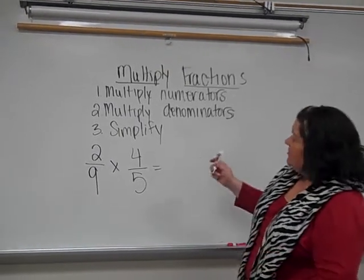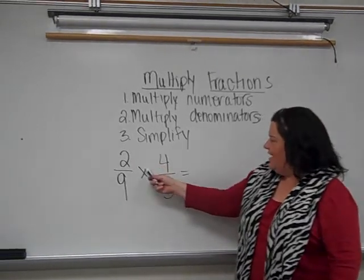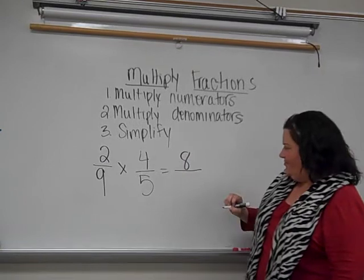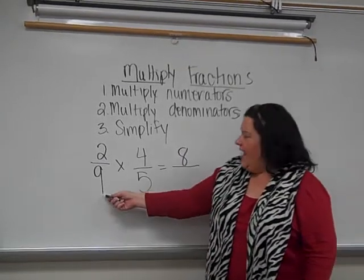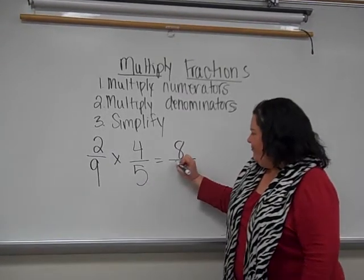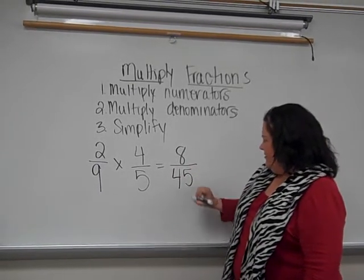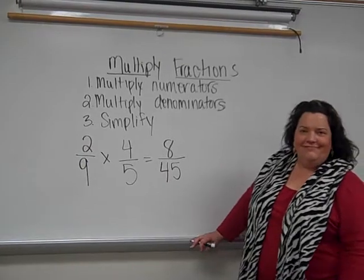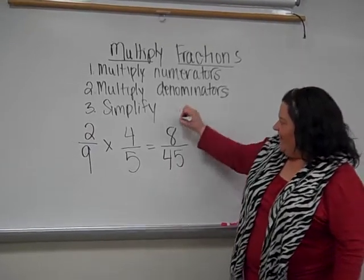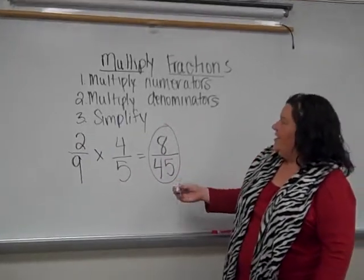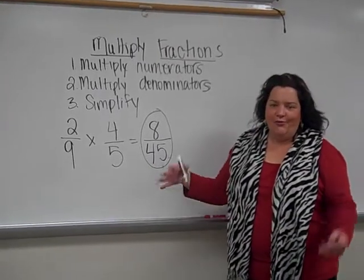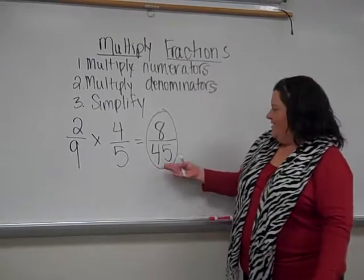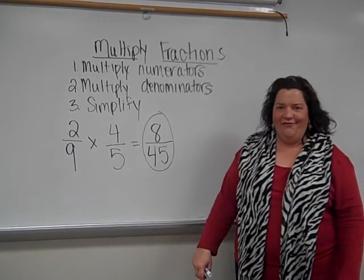So, you just simply multiply across. 2 times 4 is 8. There's my fraction bar. And then 9 times 5 is 45. And that's your answer. This is your product, 8 45ths. And I realize it's in simplest form, so I don't even have to put it in lowest terms or simplify it because it already is 8 45ths.